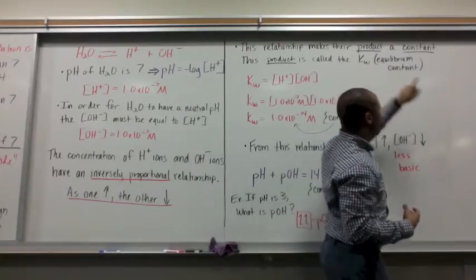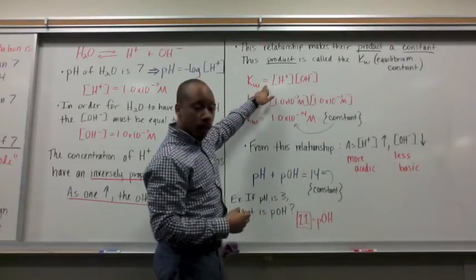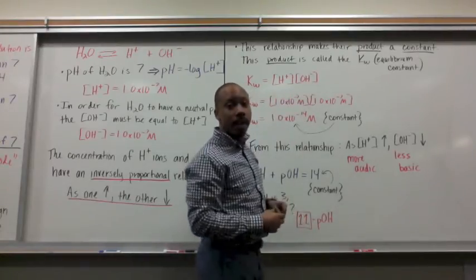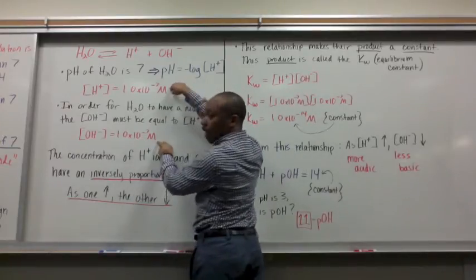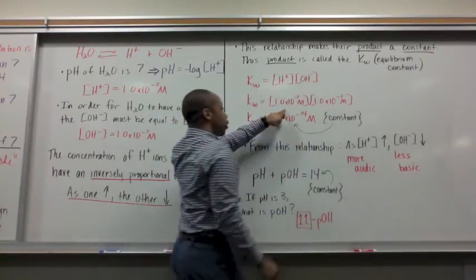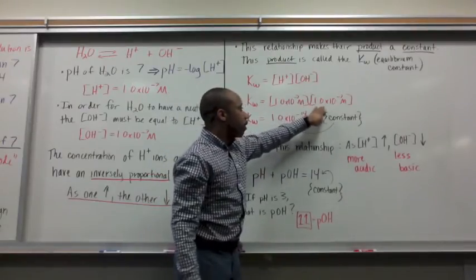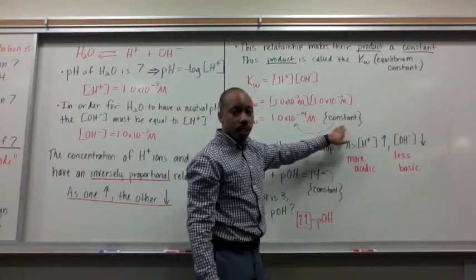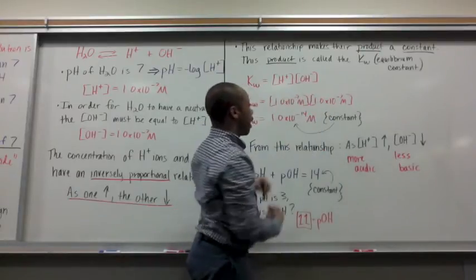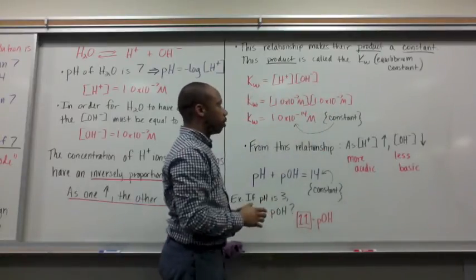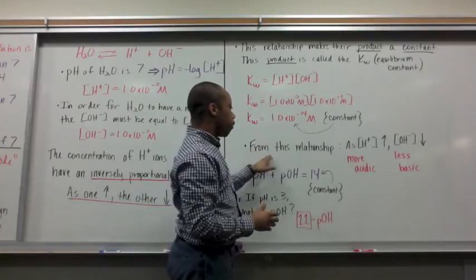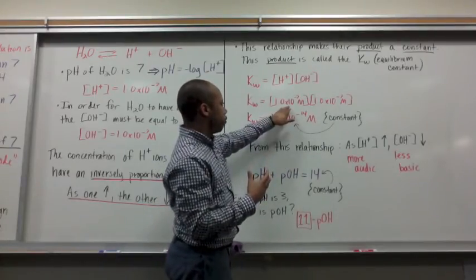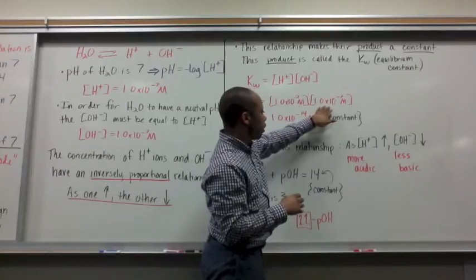So KW is equal to the product of my two concentrations, my concentration of H+ times the concentration of OH-. If I plug in these values that we decided they had over here, I get this relationship. Once I multiply these two times each other, I get my KW is equal to 1 times 10 to the negative 14th molar. This is a constant. This is saying that my two concentrations multiplied times each other have this concentration.